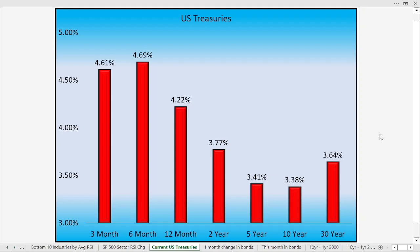We have U.S. Treasuries currently. We have the 10-year at 3.38% and the 1-year at 4.22%. That inversion has really dissipated a lot. We had over 100, 120 basis point inversion at one point, where you had more than a full percentage point on the 12-month more than the 10-year — a lot less now.